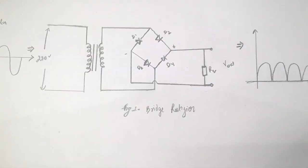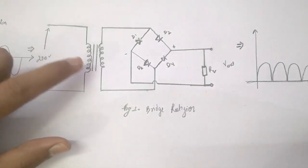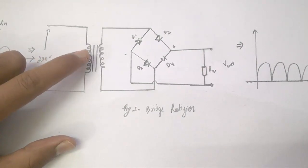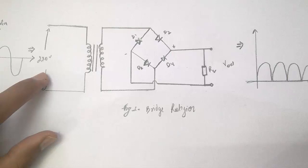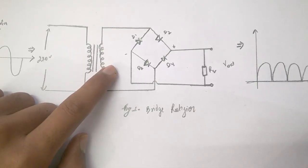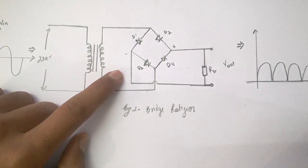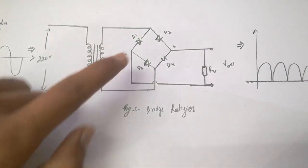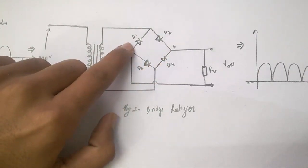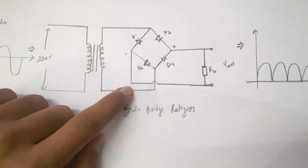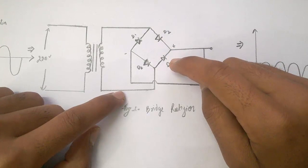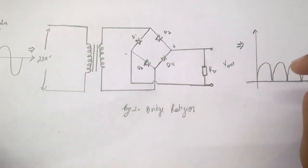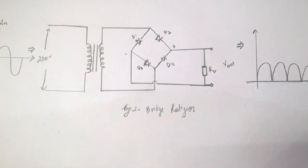Now we move on to the circuit diagram and try to understand how it works. This is the symbolic representation of the transformer. At the primary winding we give 220 volt, and at the secondary winding we get a smaller value of 12 volt or 6 volt. That is connected to the bridge type connection. When placing the components, you must be careful about the orientation of the diodes — they have to be connected exactly in this form.